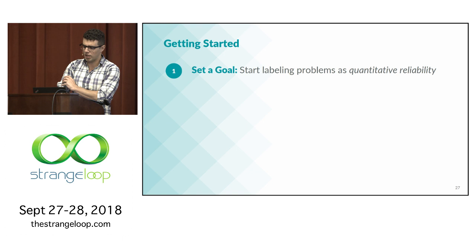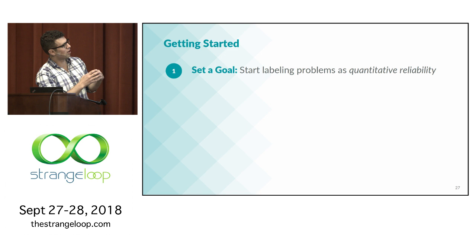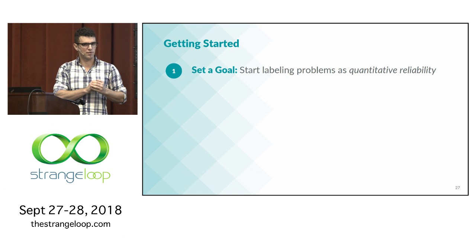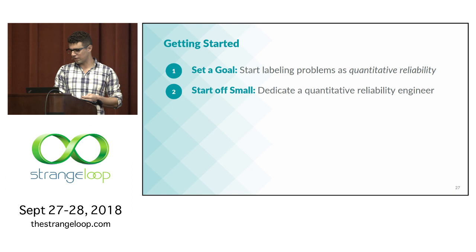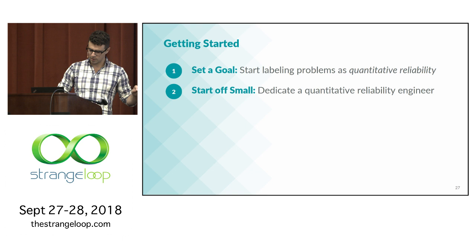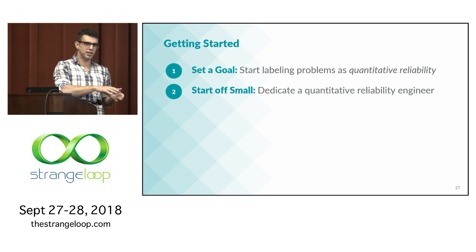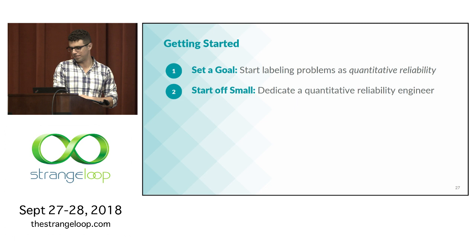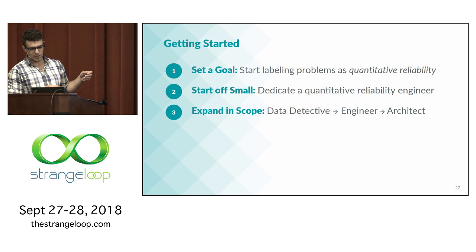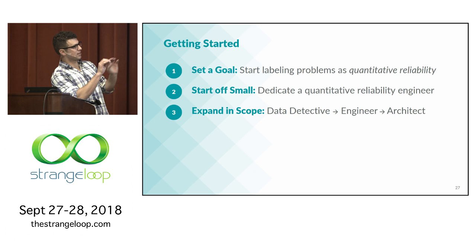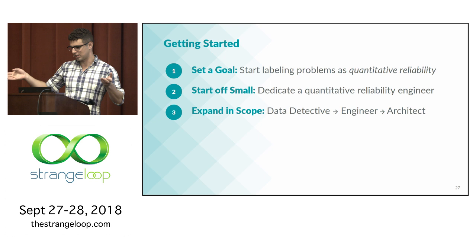To get started with quantitative reliability: first, it's worth labeling problems as quantitative reliability problems. Think about issues you've probably seen and recognize them as problems that aren't simple bugs but have more complicated solutions involving trade-offs and nuanced results. Then, start off small — dedicate a quantitative reliability engineer who can look at the bigger picture, see the forest for the trees, function as a data detective, and start building out frameworks while working with people across the company. Then expand in scope: you'll start doing work as a data detective, figuring out issues and getting a track record. Then you'll start building systems to address those classes of issues. And then you'll start designing the next system so you don't see those issues in the future.